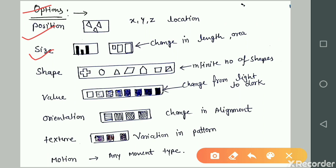Next is shape. In this representation, there are an infinite number of shapes like plus, circle, triangle, and many more.